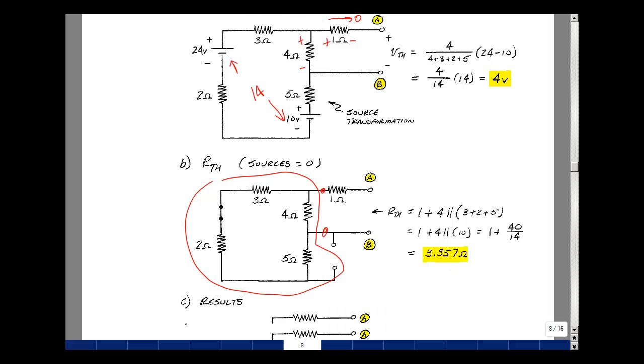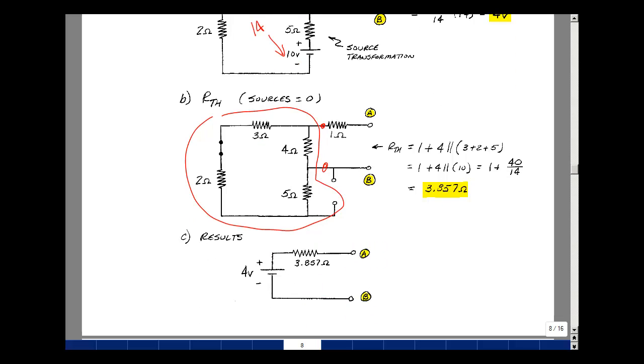So my Thevenin equivalent circuit, I found the voltage between nodes A and B, and it was positive. So the positive sign on V Thevenin will be near that terminal A, and the minus near terminal B, or in this case is terminal B, and then the Thevenin resistance of 3.857. And this is Supplemental Problem 3.8.